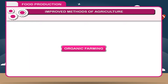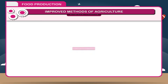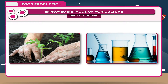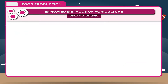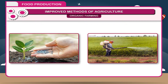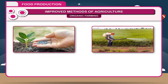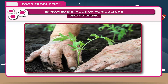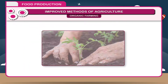Organic farming is an agricultural practice of growing crops without the use of synthetic chemicals. Instead of chemical fertilizers and pesticides, bio-fertilizers are used. Organic farming does not alter the composition of the soil.